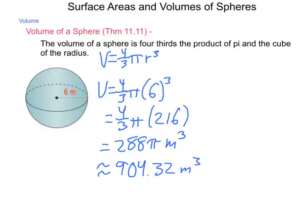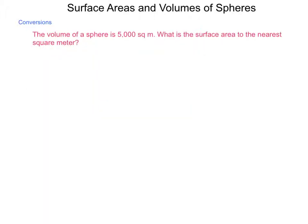One thing we do often need to do, just like going from circumference of the earth to find its surface area, is being able to convert from a surface area to a volume, or from volume to a surface area. Let's take an example. The volume of a sphere is 5,000 square meters. What's the surface area to the nearest square meter? We know volume is equal to 4 thirds pi r cubed, and we need to solve this for r. Using substitution, 5,000 equals 4 thirds pi r cubed.